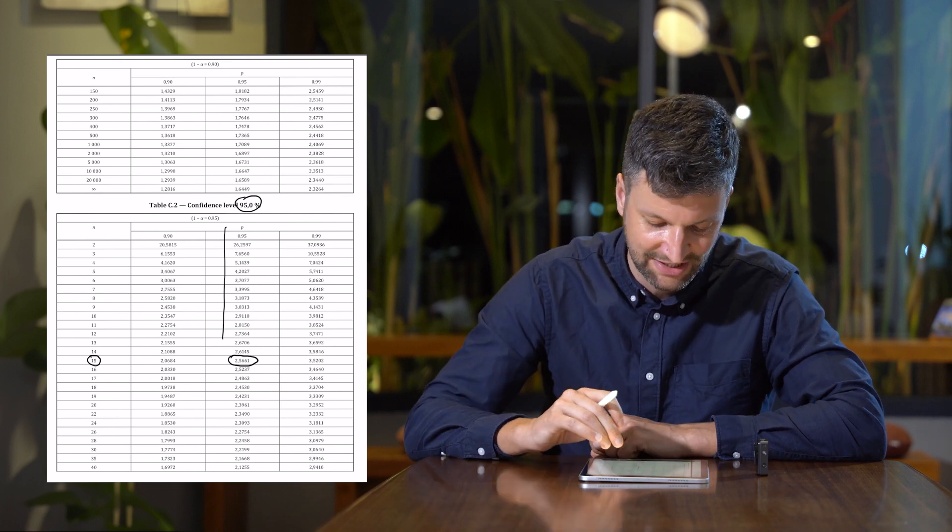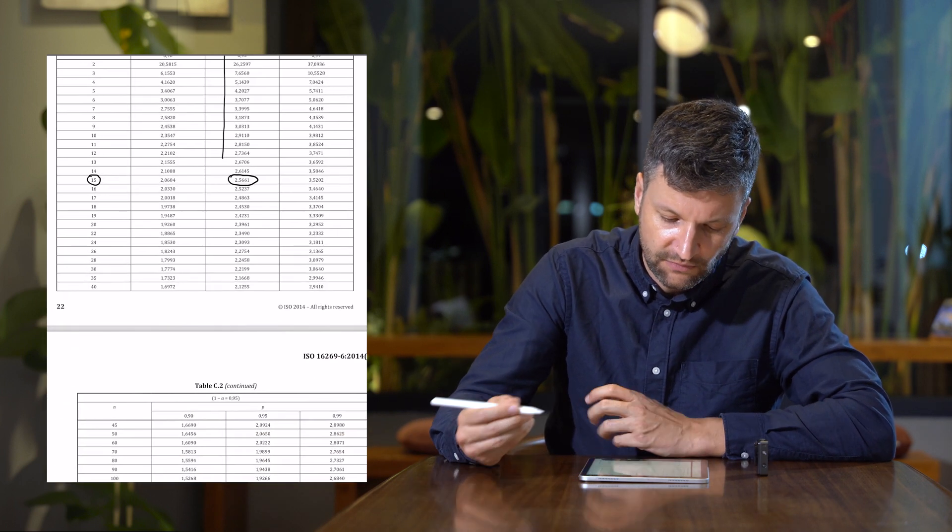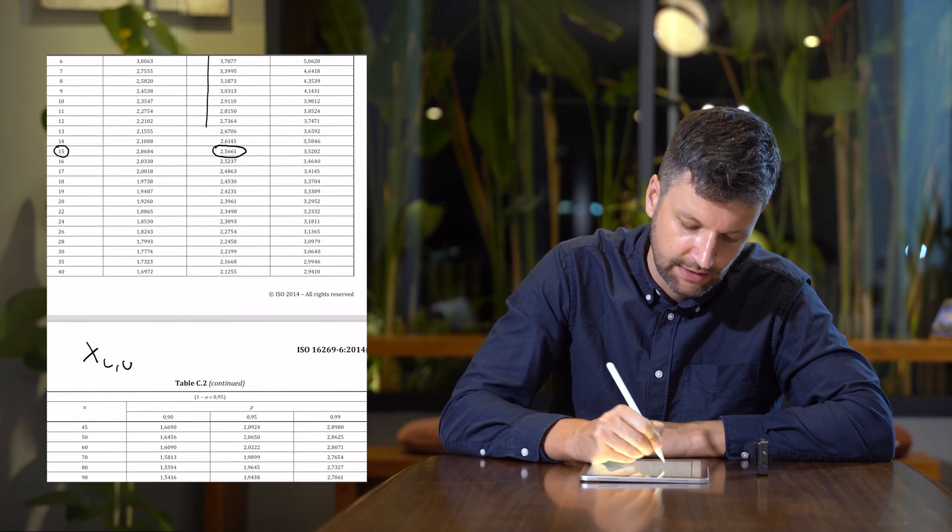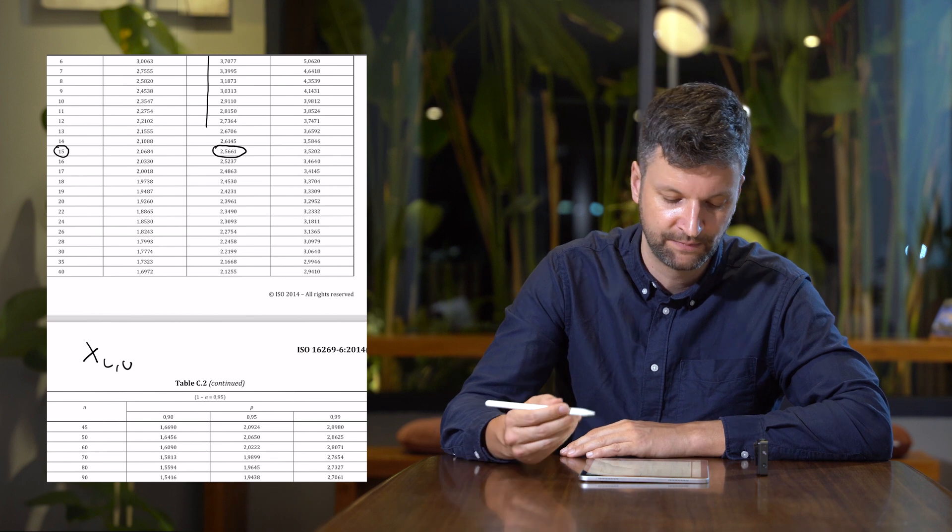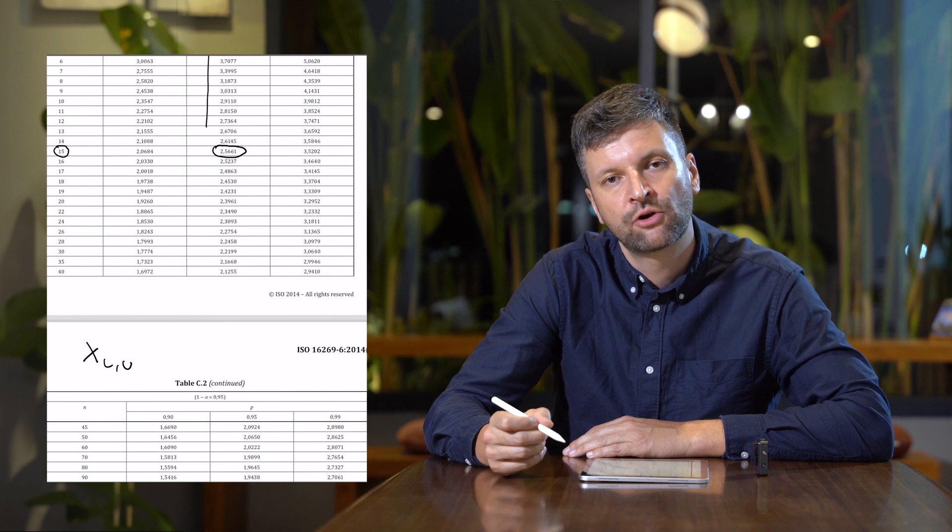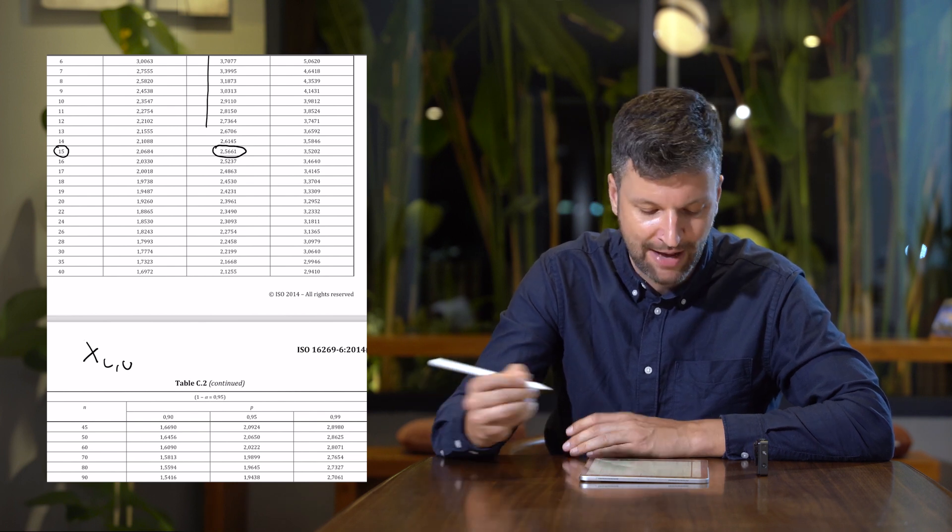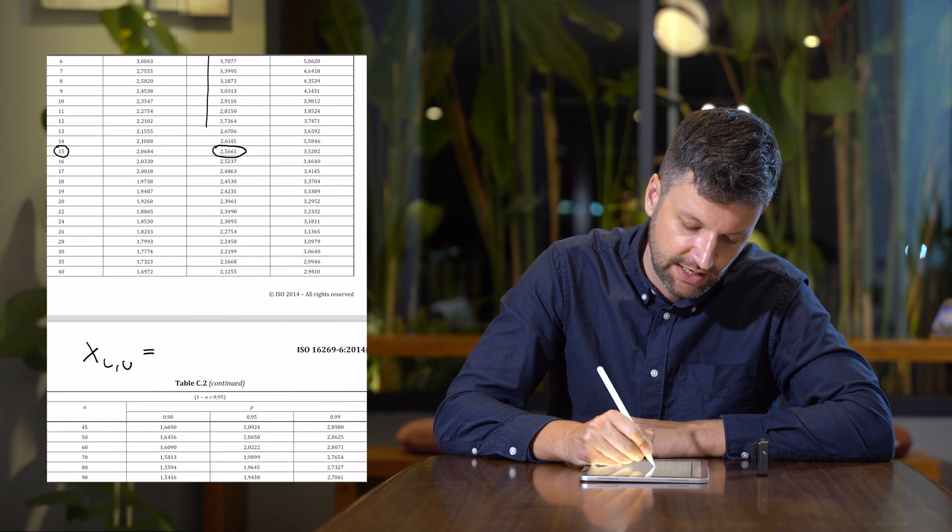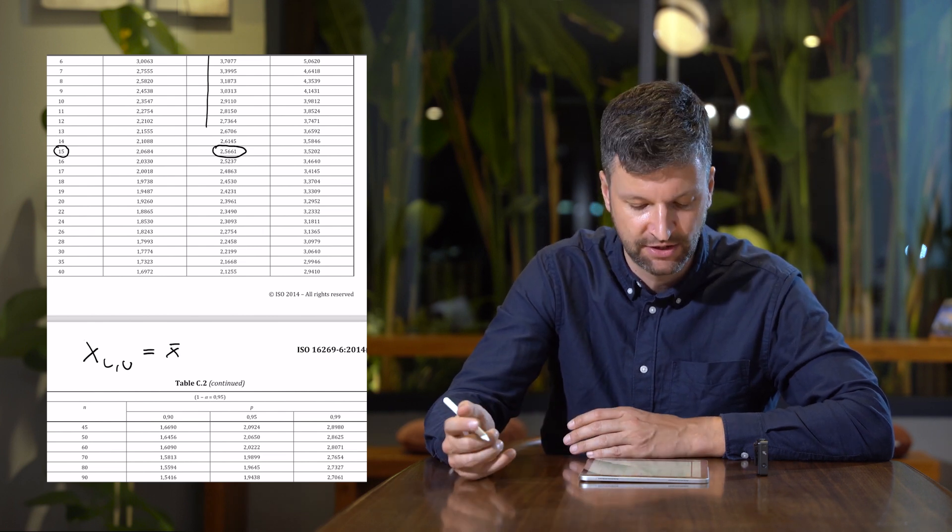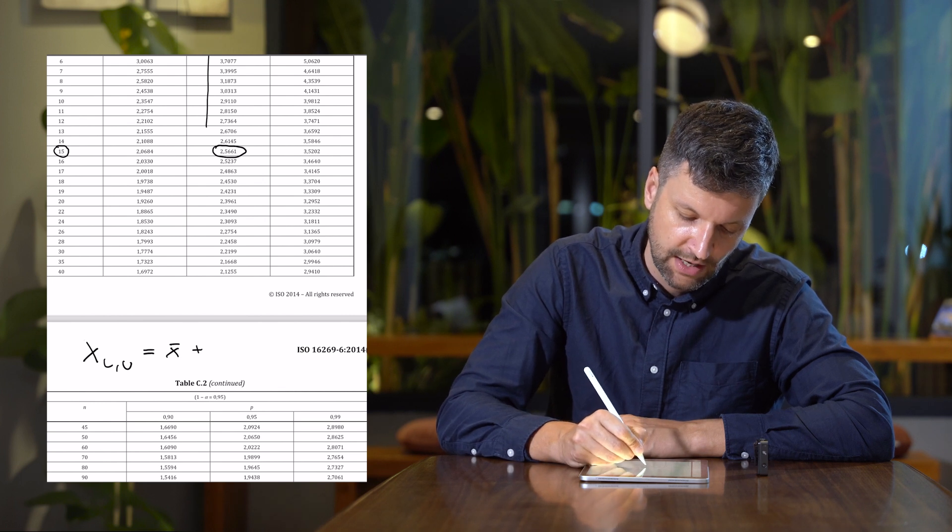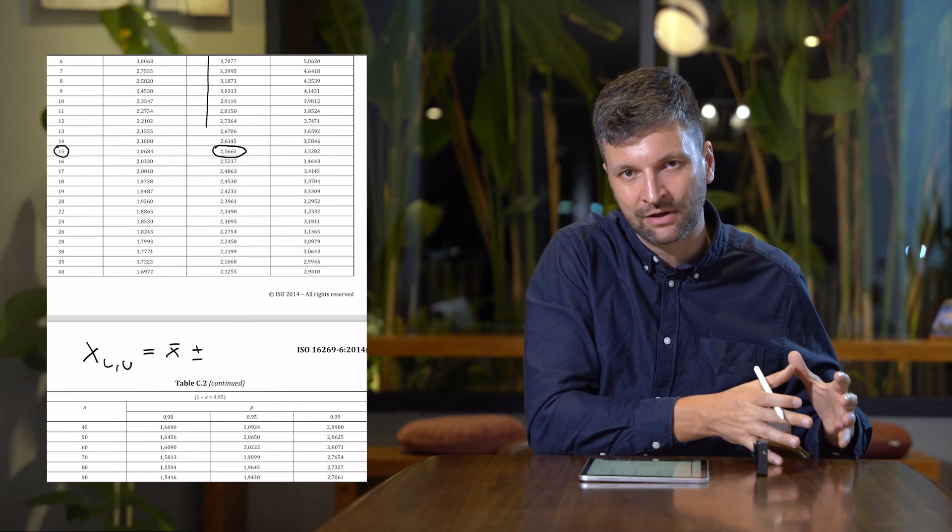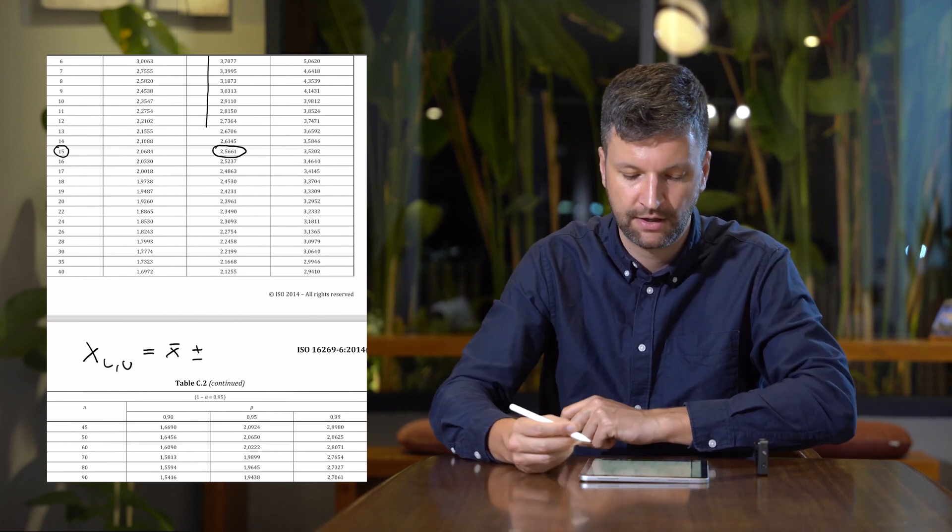So what do we do with this K value now? We go into the equation to calculate the statistical tolerance interval. The XL stands for the lower tolerance interval, or U for the upper tolerance interval. Then we say X bar, which is the average of those 15 samples that you took from the measurement, and plus or minus depending on whether we want to calculate the lower or the upper tolerance interval.